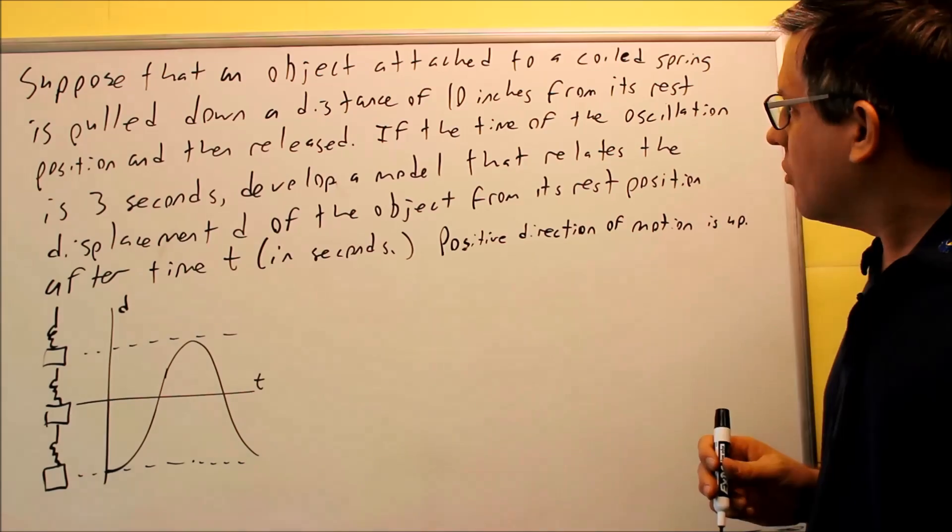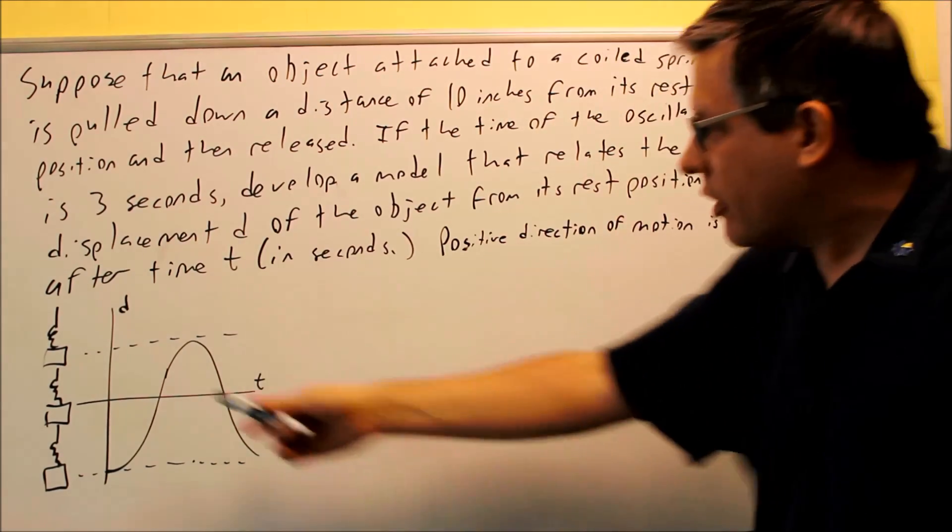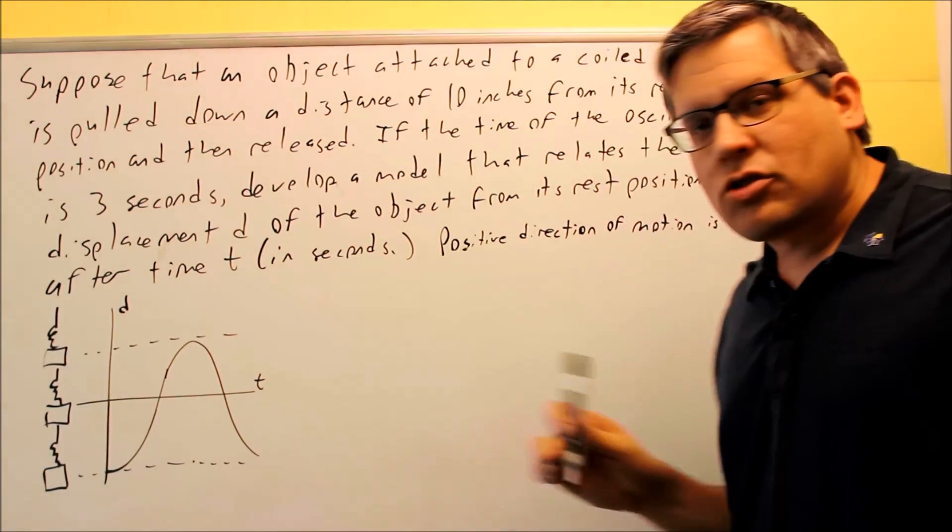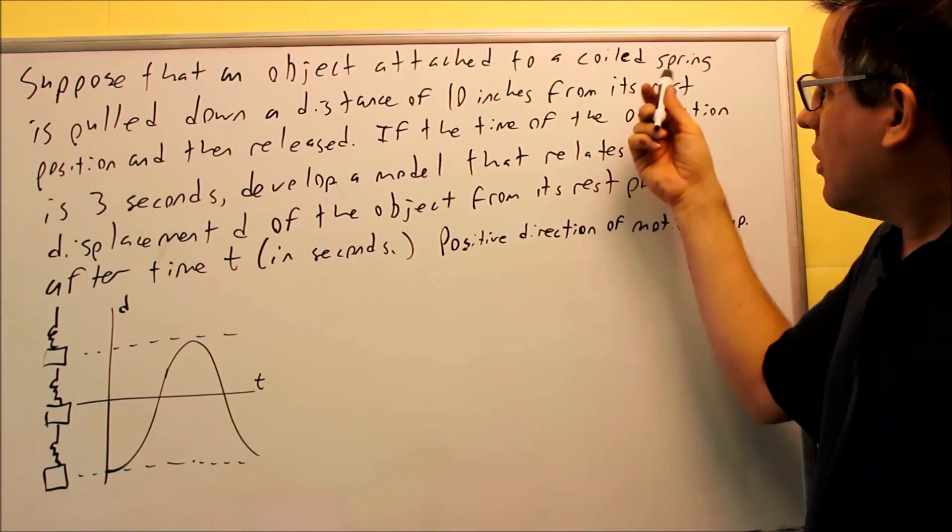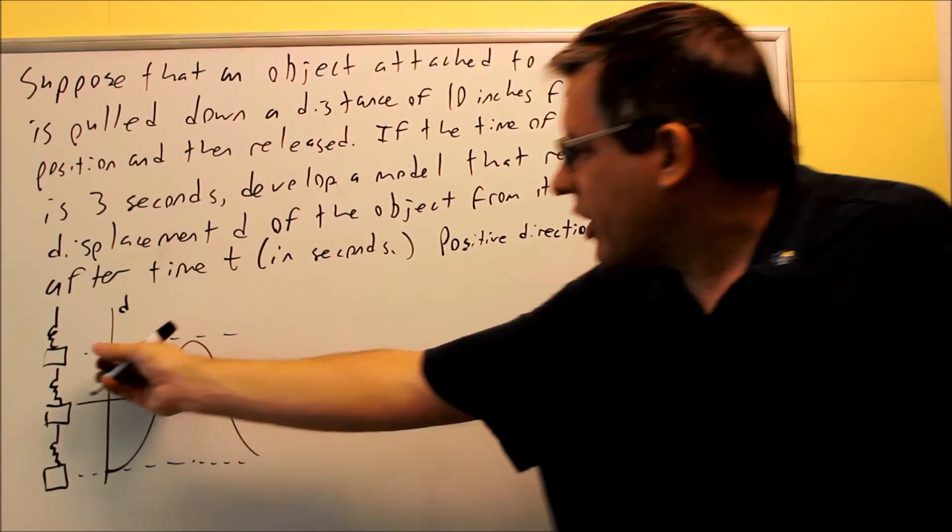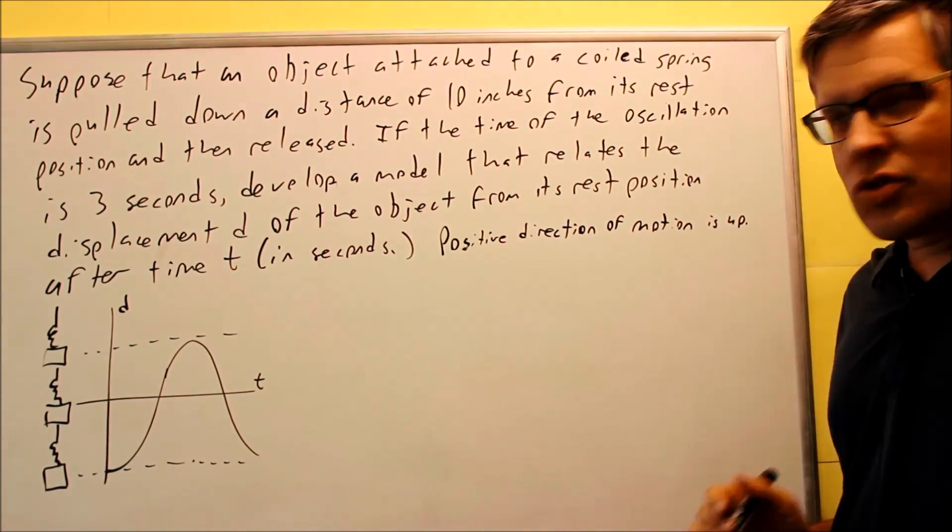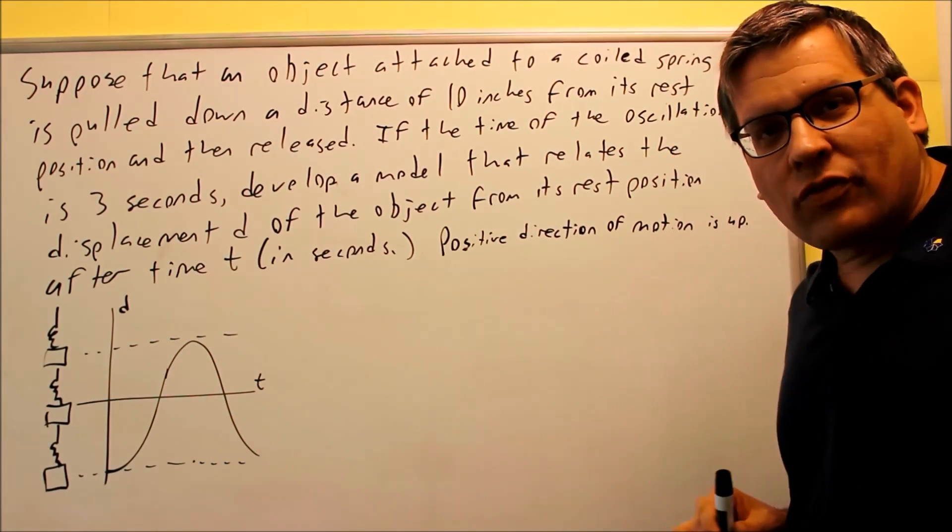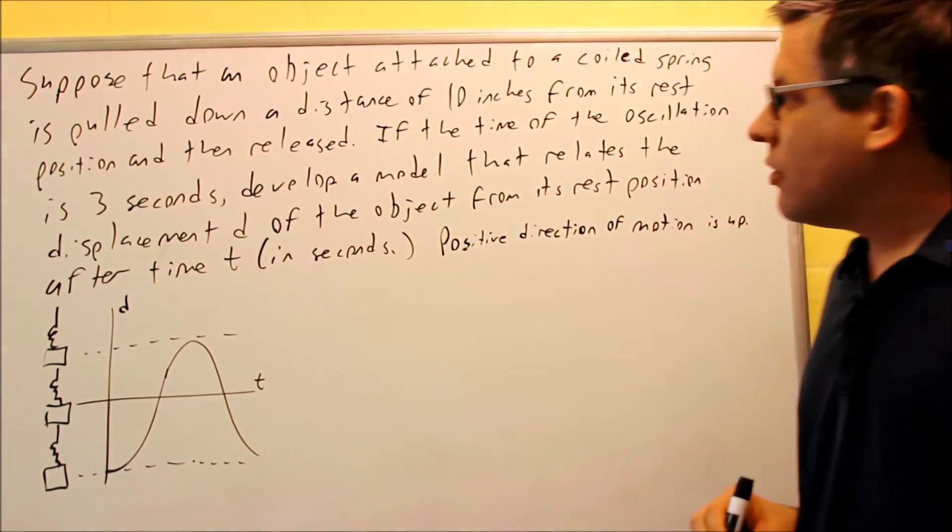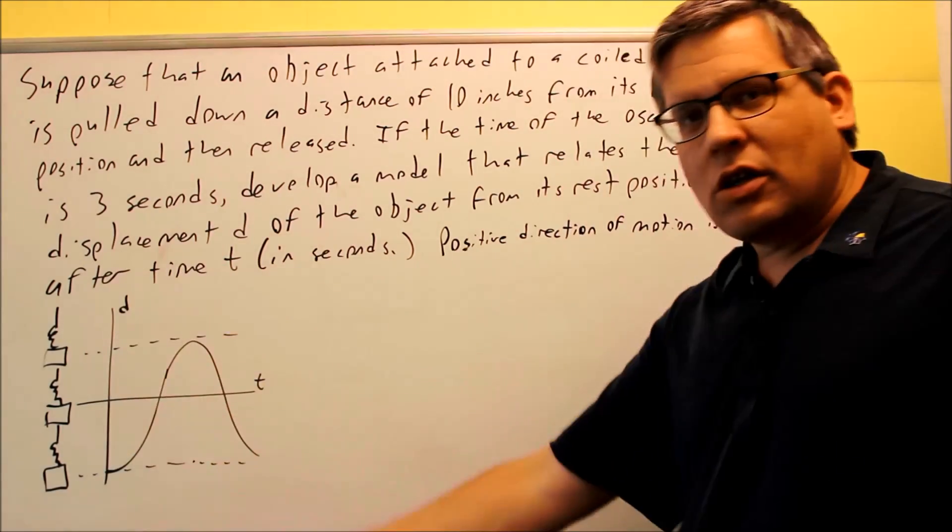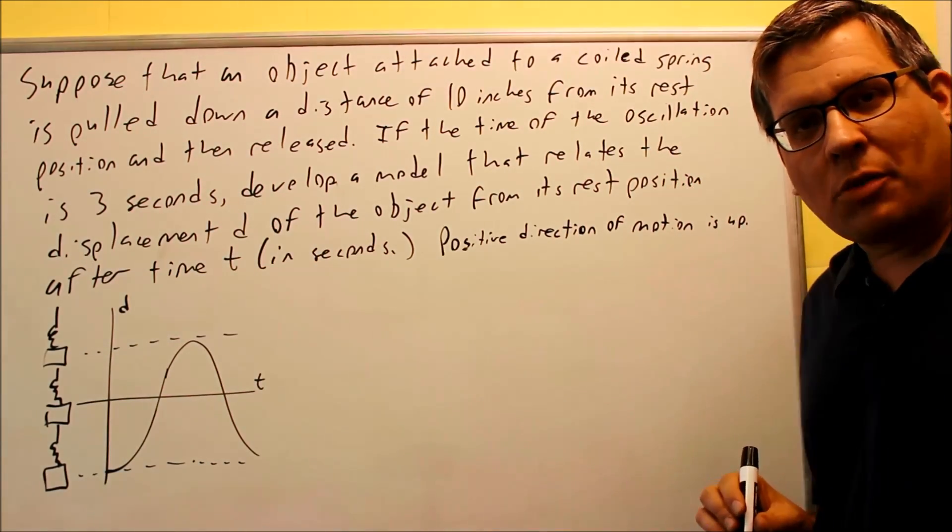Suppose that an object attached to a coiled spring. We have a model that looks like this that I showed you earlier in the previous introduction video. It's pulled down a distance of 10 inches. This is actually the graph that's going to describe that because we're pulling that all the way down to here. Then we release it and it's going to go back and forth with simple harmonic motion.